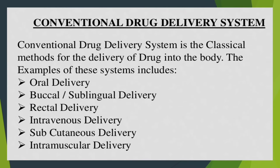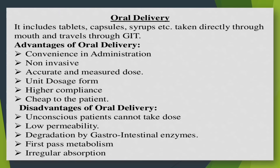Conventional drug delivery system refers to the classical methods for the delivery of drugs into the body. Examples of these systems include oral delivery, buccal or sublingual delivery, rectal delivery, intravenous delivery, subcutaneous delivery, and intramuscular delivery. Oral delivery includes tablets, capsules, syrups, etc., taken directly through the mouth and traveling through the gastrointestinal tract (GIT).